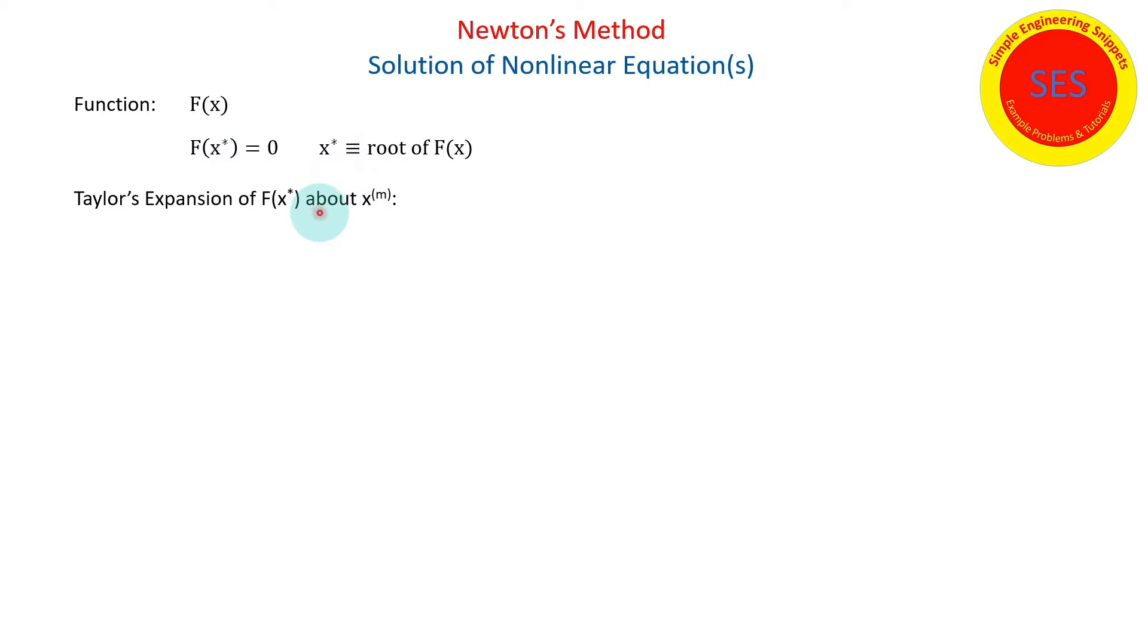And to derive Newton's method, we're going to use a Taylor's expansion, and we're going to expand f(x*) about an iterative point x^(m). And so doing Taylor's expansion, we get the function at x^(m) plus the derivative of x^(m) times delta x plus the second derivative times delta x squared plus higher order terms. This is all we need.